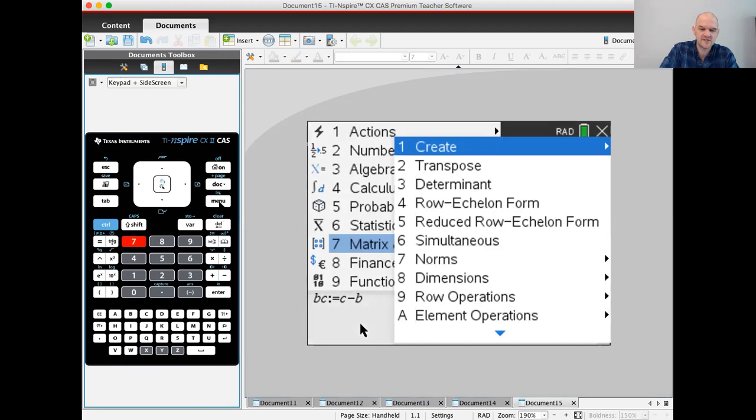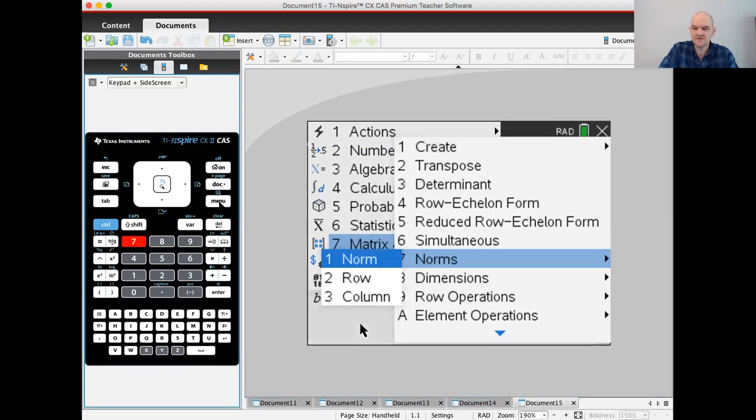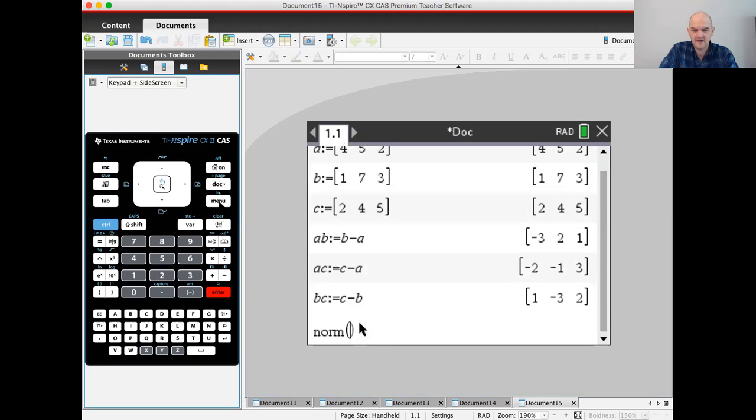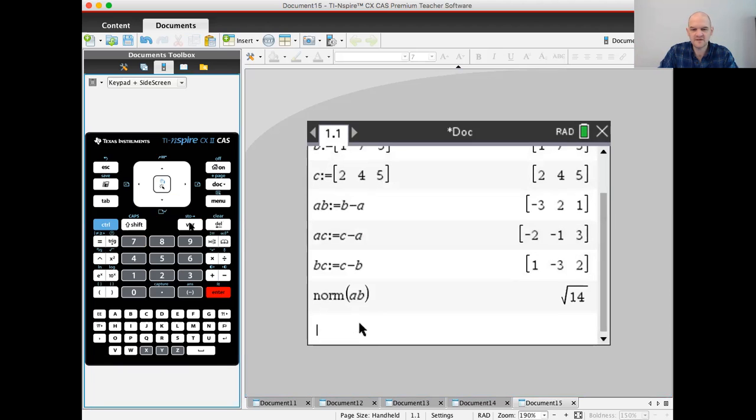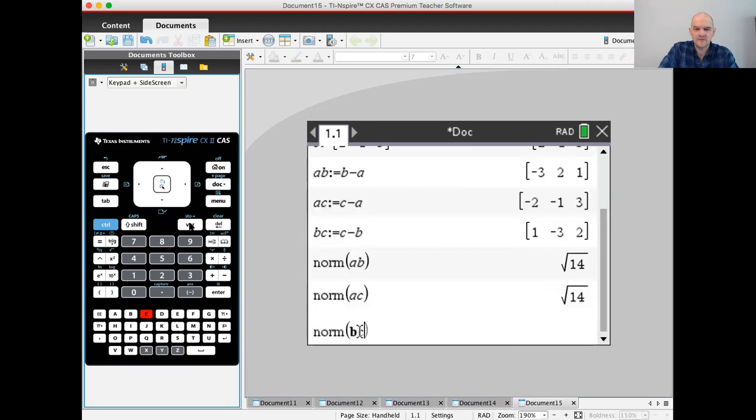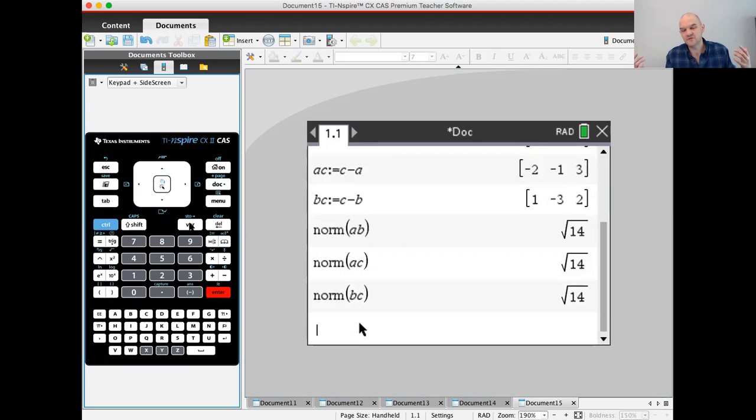Now I'm going to find the norm of each of these. Menu 7-7 Enter is like a classic, and then I can type AB or choose from list. Then I'm going to do the others, AC and BC. So we showed that they're all equal. That's another way to do it.